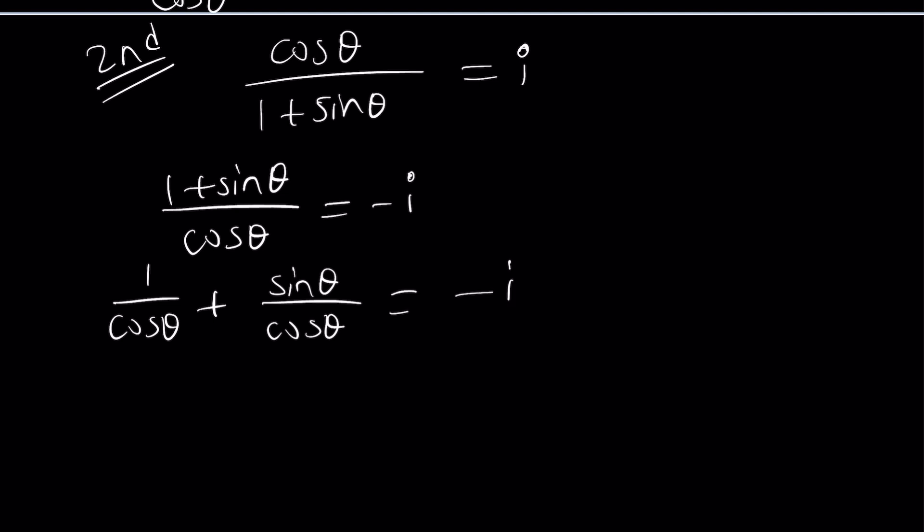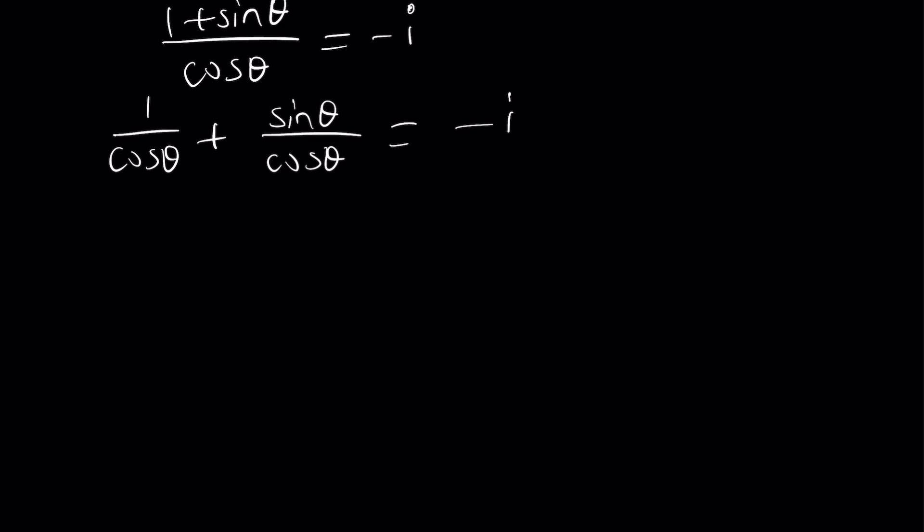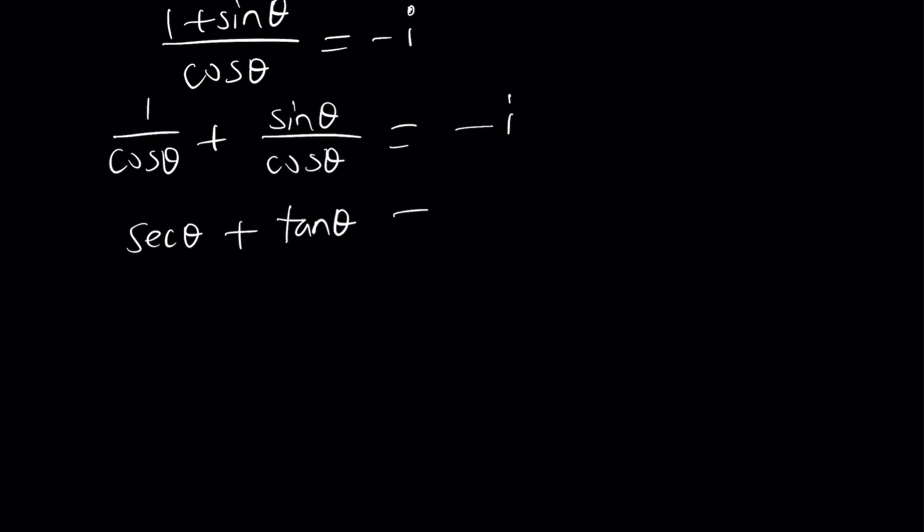So I'm going to write this as one over cosine theta plus sine theta over cosine theta equals negative i. As you know one over cosine theta is secant theta. You can either write it like that, it's totally up to you or leave it like this, and this is tangent theta. At this point I thought about squaring both sides which may or may not help because secant squared is one plus tangent squared. But I haven't tried it. I took a different approach which I'm going to show you. But if you go ahead and try squaring both sides let us know what you find. So here's what I'm going to do instead. I'm going to draw a right triangle.